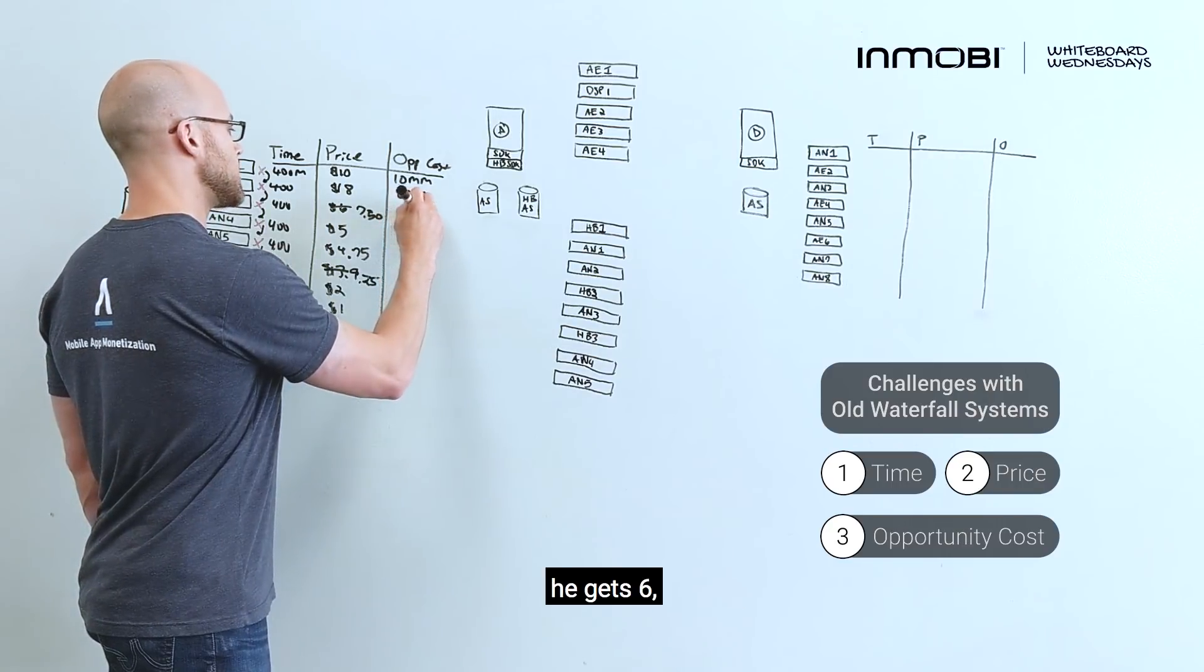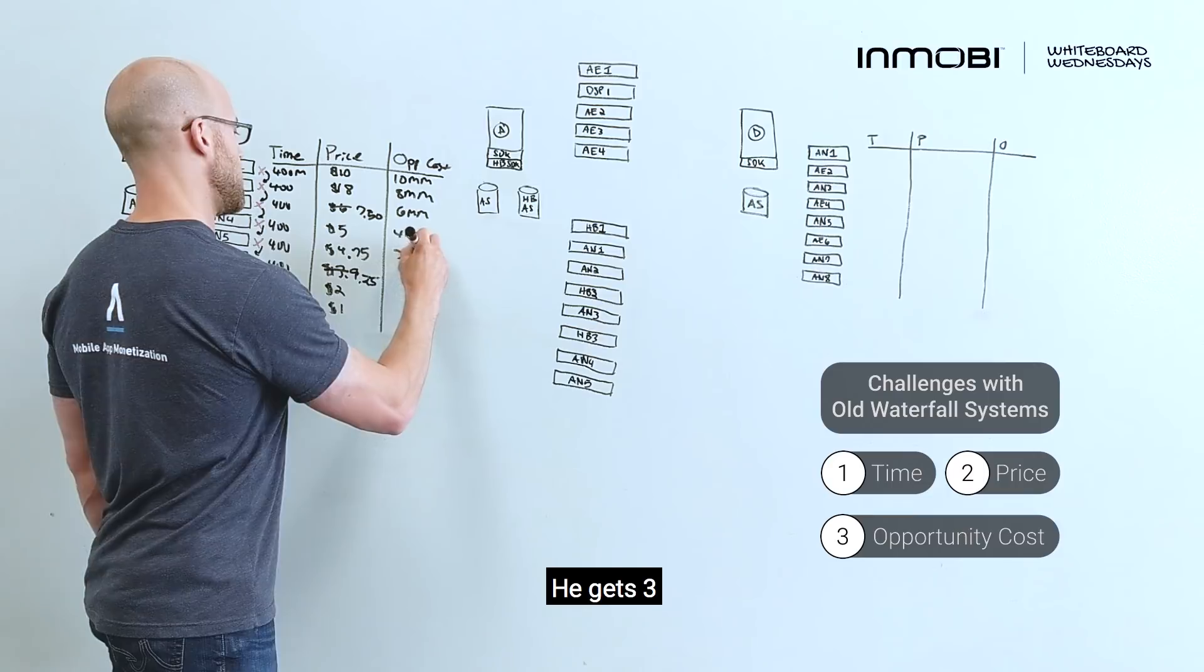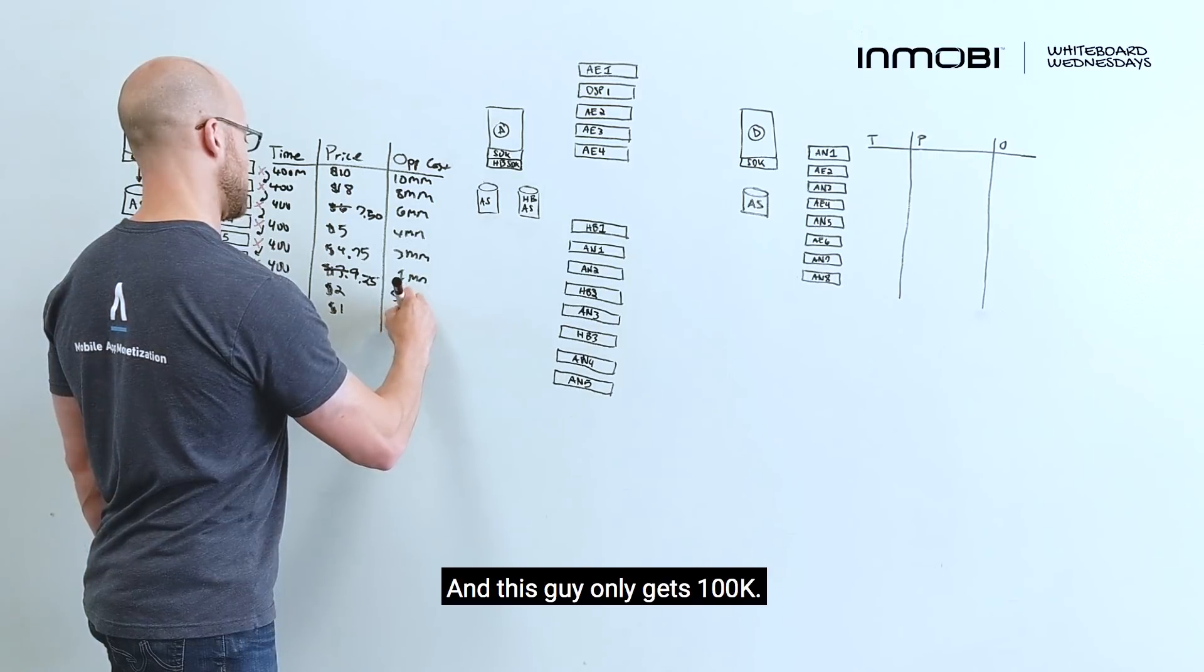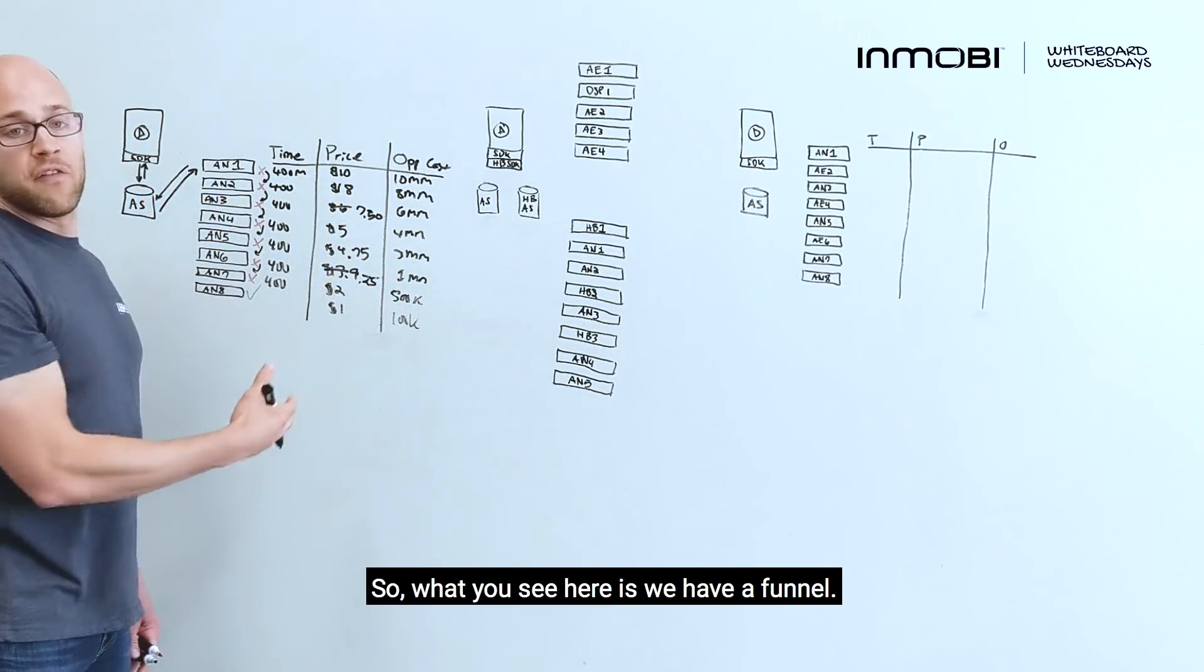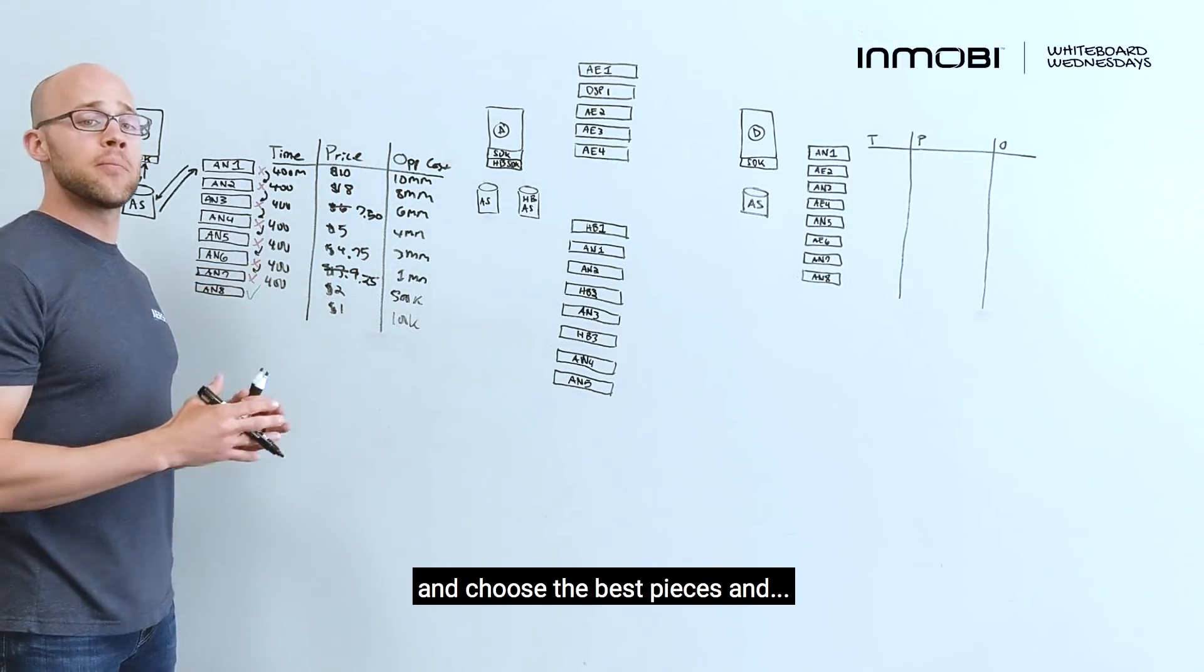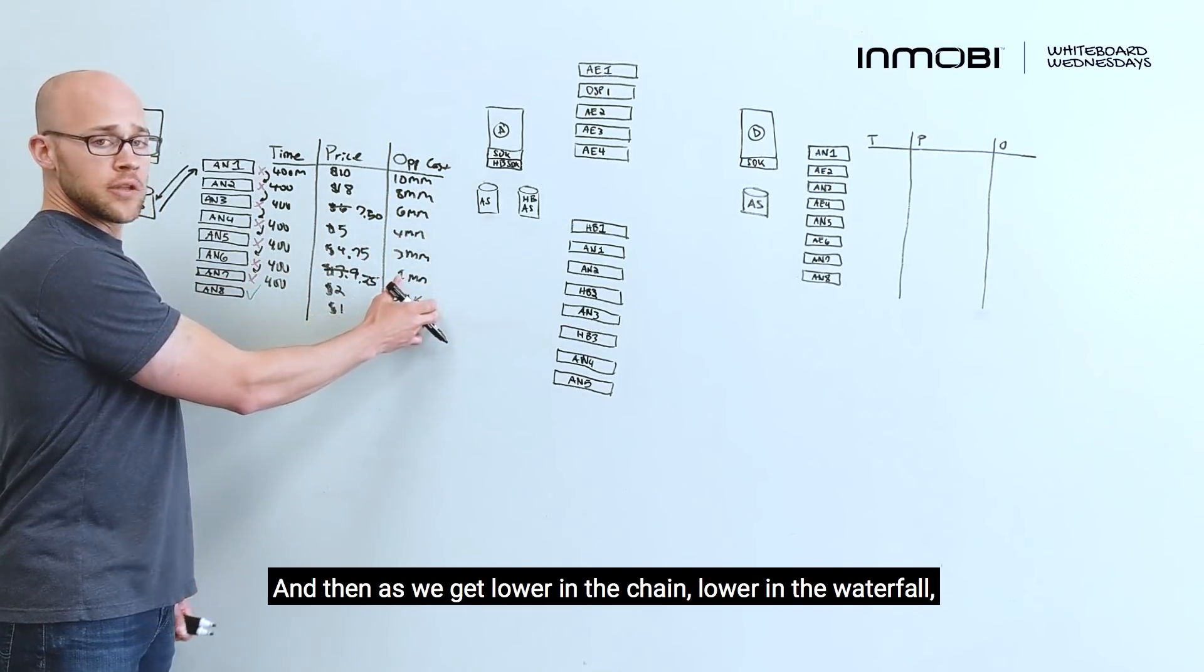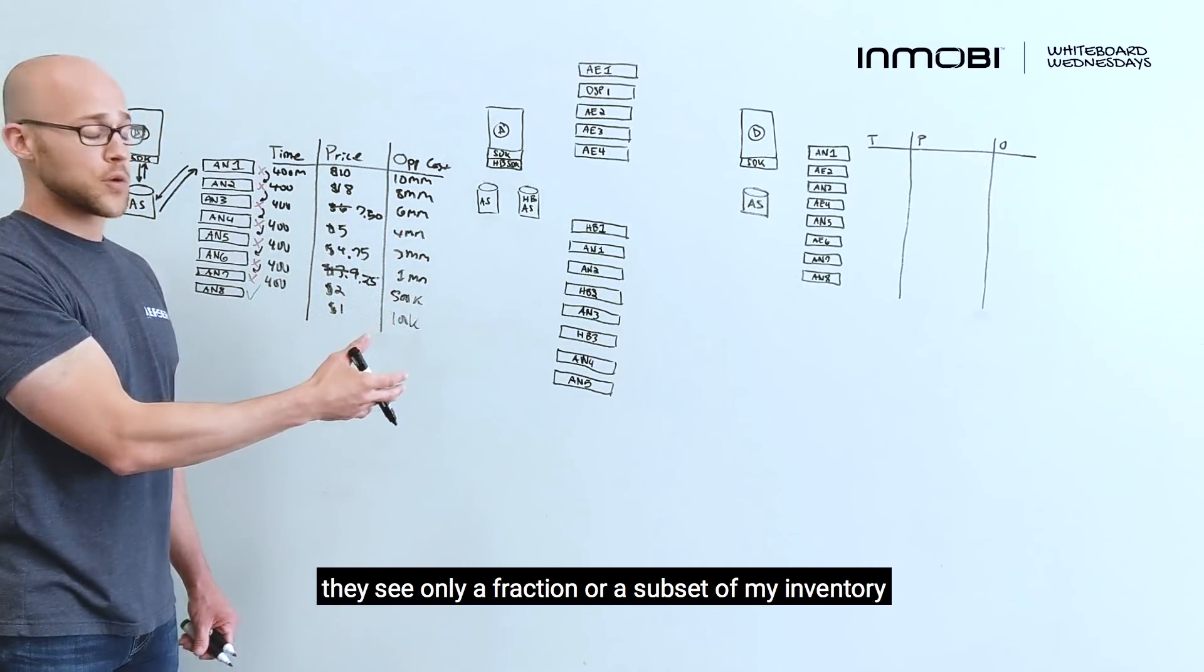Down and down we go. He gets six. He gets four. He gets three. He only gets one. So what you see here is we have a funnel. The guy at the top gets to see all of the inventory, choose the best pieces and users they want to monetize, and then as we get lower in the chain, lower in the waterfall, they see only a fraction or a subset of my inventory.